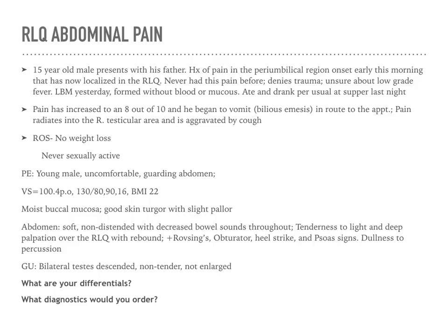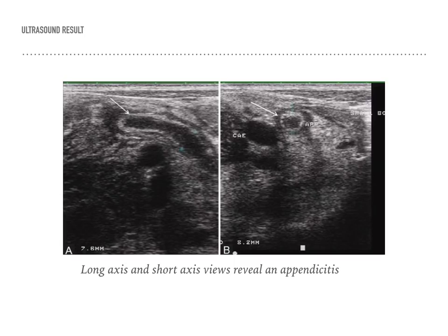Differentials include testicular torsion, renal calculi, or appendicitis. Diagnostics to order: CBC with differential, complete metabolic profile, UA. For radiology, an abdominal ultrasound, or CT scan if the ultrasound is undetermined. Ultrasound images in both long axis and short axis views shown here are positive for appendicitis, with arrows indicating the location of appendix inflammation.